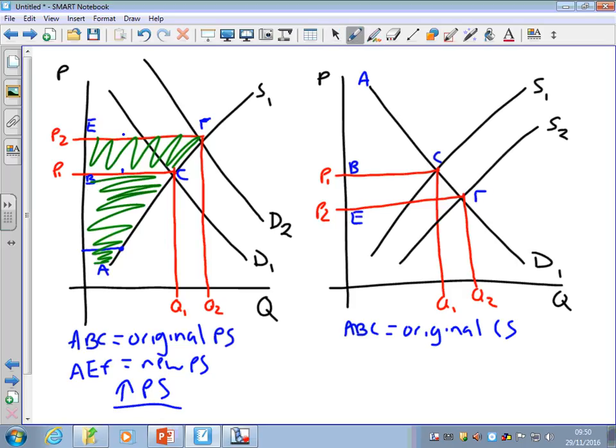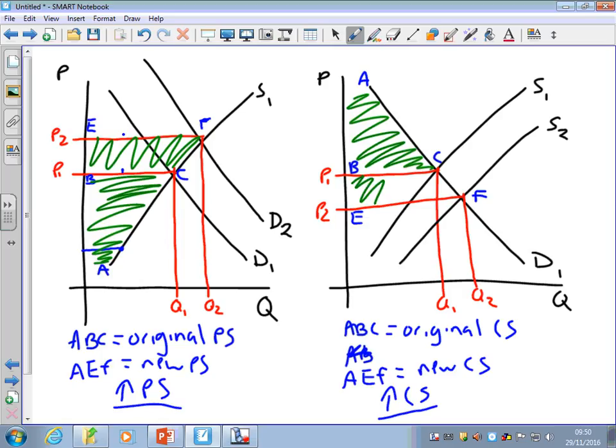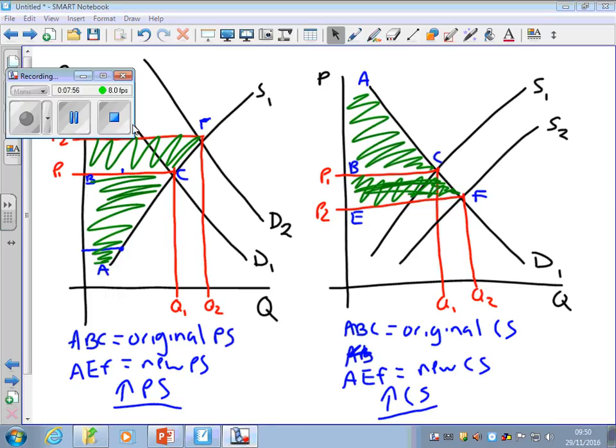What we will now get then is this point and this point, so the new consumer surplus will be A, E, F. This shows that when you have this outward shift in supply, you will have an increase in consumer surplus. This was the original consumer surplus, but by lowering the price, it means that on every one that you buy, you can now earn more surplus, which means you gain that additional area there.